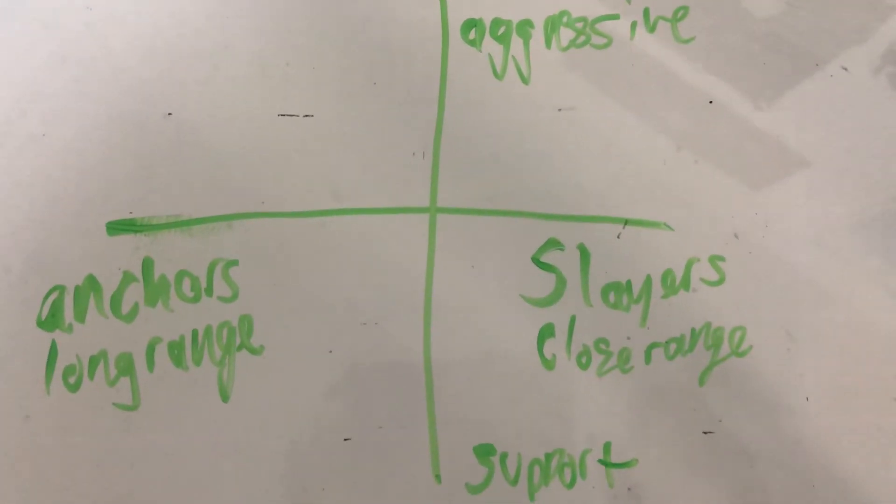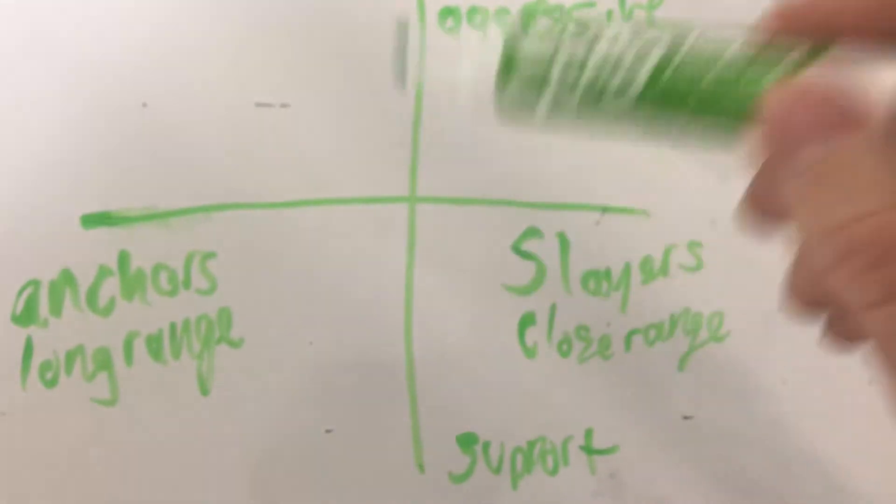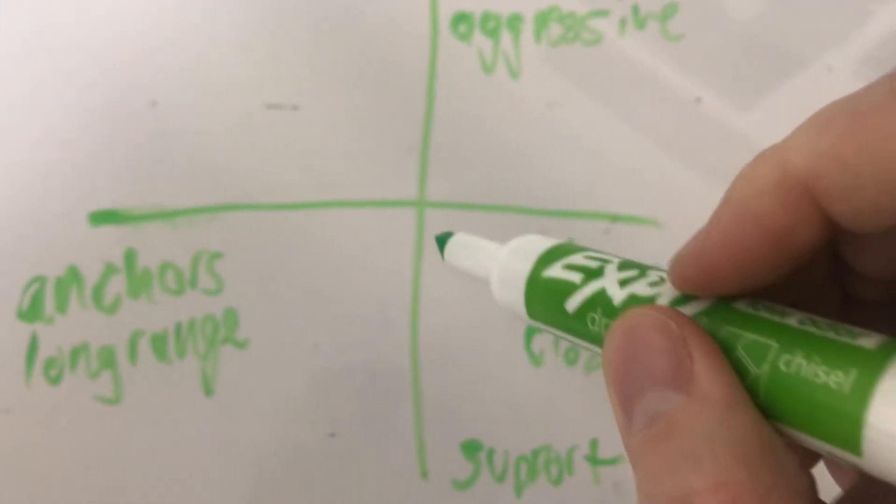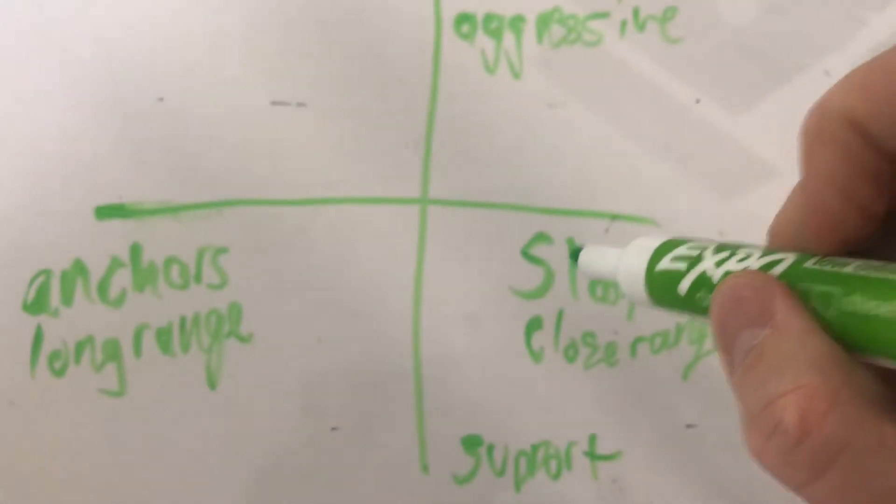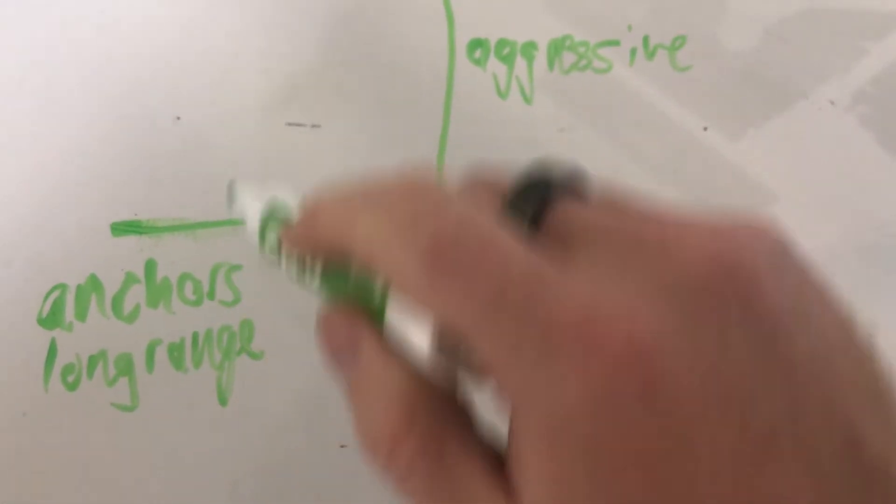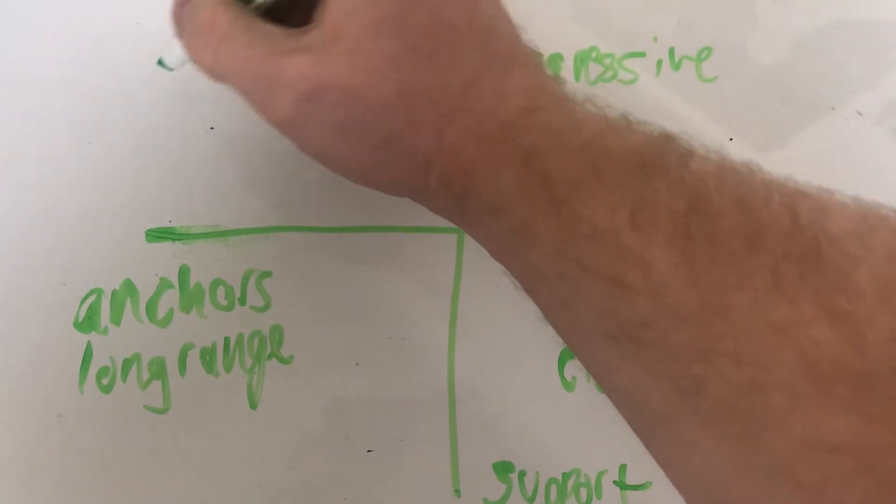And so really what made me think about this is the hydra. Because the hydra in this game is very aggressive, it gets kills very easily, it's got the booyah bomb, but it's traditionally thought of as this anchor but it's an anchor that gets a lot of kills. So I place it over here, so here's the hydra.